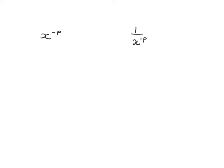So just to repeat that, because it will help us a lot if we get it straight: x to the minus p — our rule just tells us negative in the exponent means take it down — so it's 1 over x to the p.